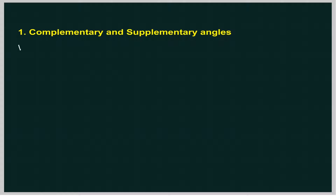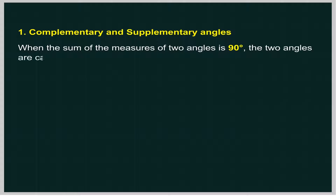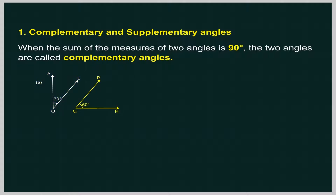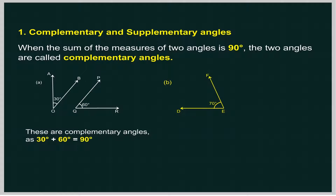When the sum of the measures of two angles is 90 degrees, the two angles are called complementary angles. Angle AOB equals 30 degrees and angle PQR equals 60 degrees. These are complementary angles, as 30 degrees plus 60 degrees equals 90 degrees.